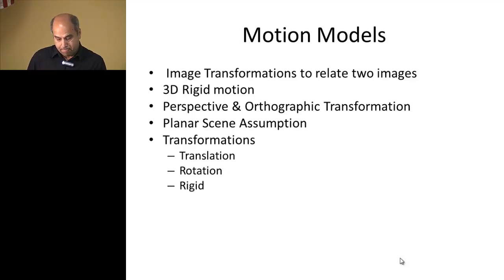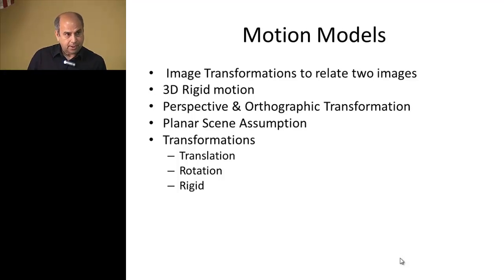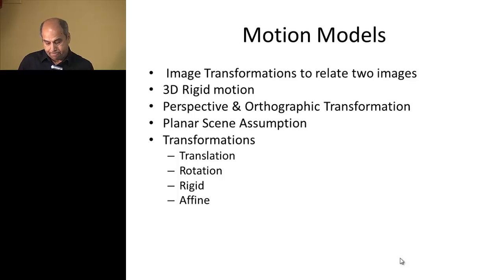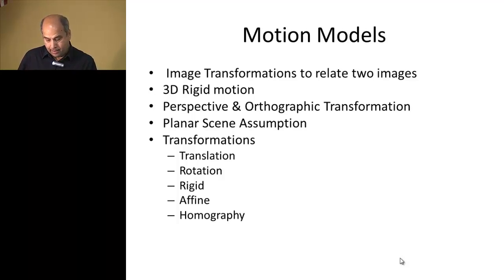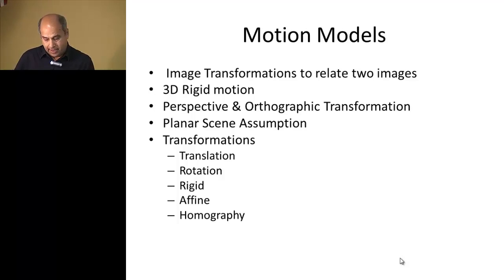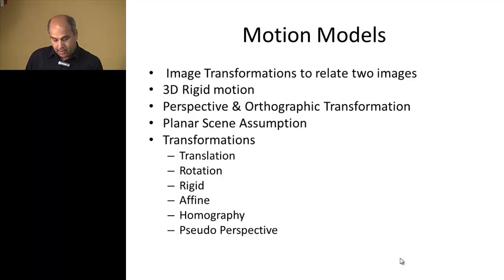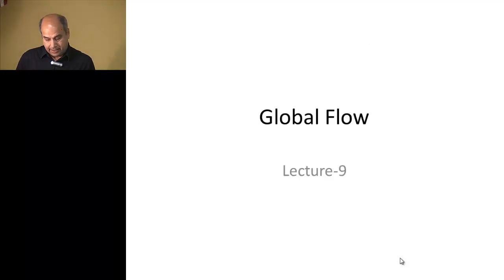We also assume that if the scene is planar — which gives a constraint about depth — we can come up with a better, simpler model. We talked about different transformations: translation, rotation, rigid transformation (rotation plus translation in the image plane Z-axis only), affine (which captures all three plus scaling and stretching with 6 parameters), and homography, which is the more general case with 8 parameters. The homography has a numerator and denominator, creating some difficulty. An approximation of it is pseudo-perspective, derived from a Taylor series.